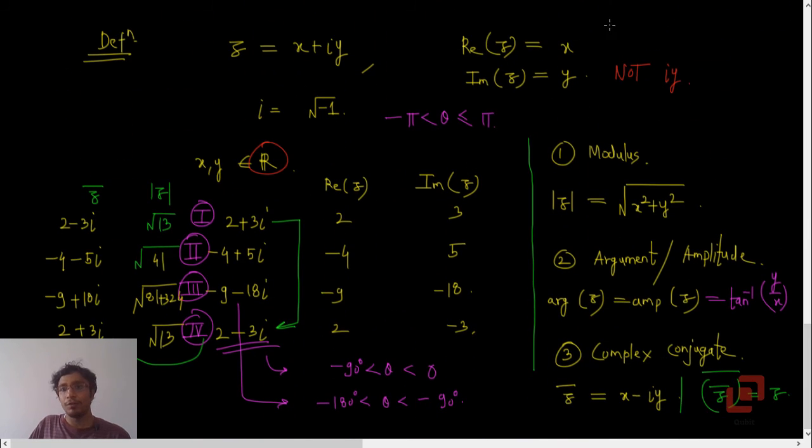You may ask, what if x is 0 and y is non-zero in any complex number? If x is 0 and y is non-zero, we call such a complex number as purely imaginary number.